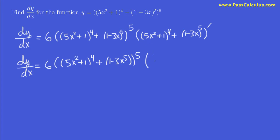The 4 is going to come to the front and then we have 5x squared plus 1, the 4 goes down to a 3 and then we multiply by the derivative of this which is 10x, right, okay. Plus, and now we do the derivative of this 5 times 1 minus 3x to the power of 4 and then we multiply by the derivative of the inside and we get negative 3.